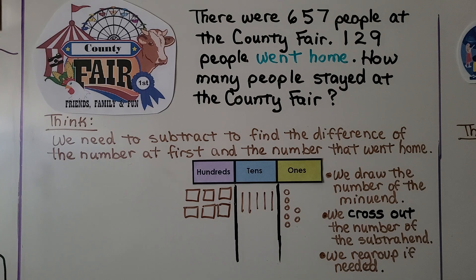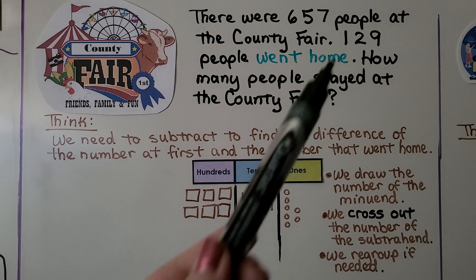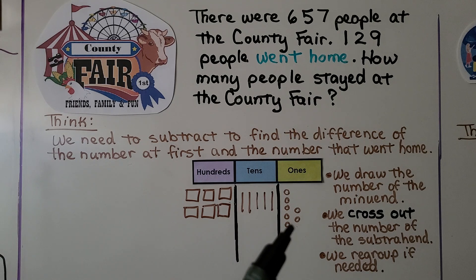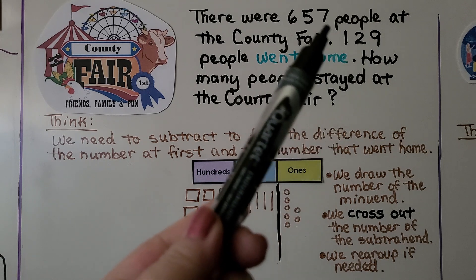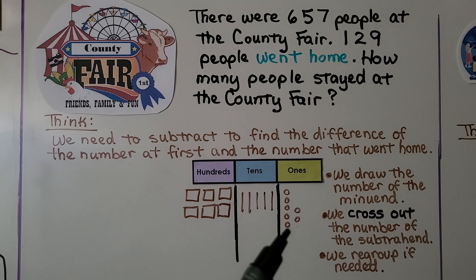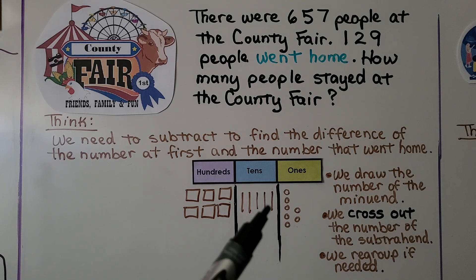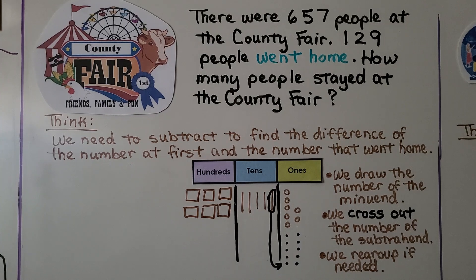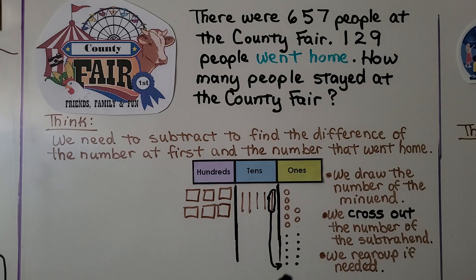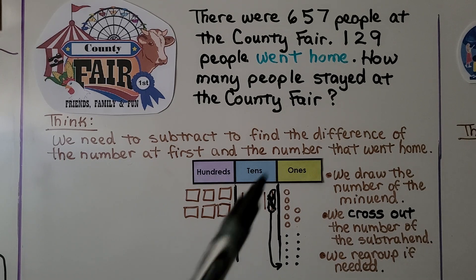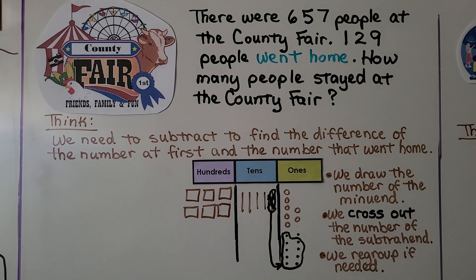We cross out the number of the subtrahend, the number we're taking away. We need to take away 9 ones from 7 ones, but we don't have enough. We're going to have to regroup a 10 as 10 ones. Now that we regrouped it, we can cross that 10 out because it's not there anymore — it's over in the ones place as 10 ones. Now we can take the 9 away. We circle 9 and cross them out.